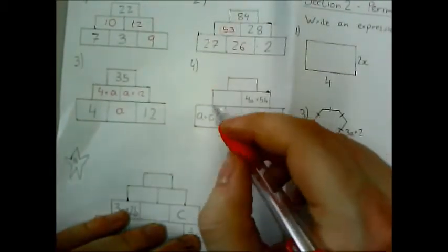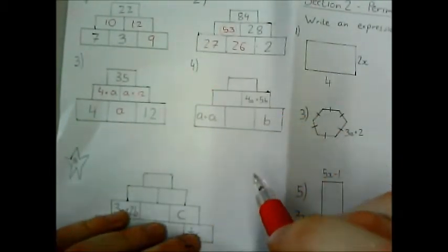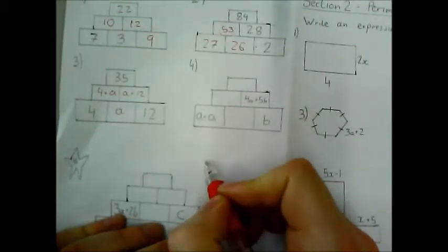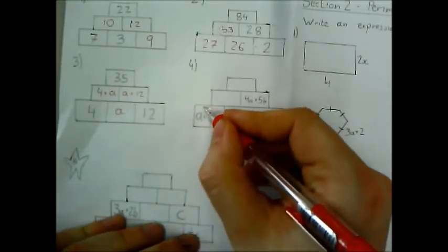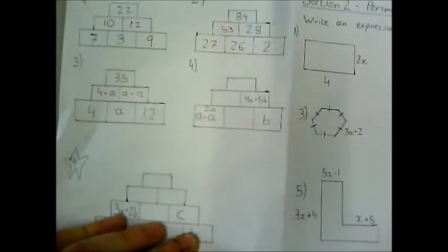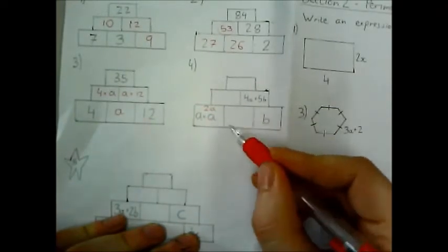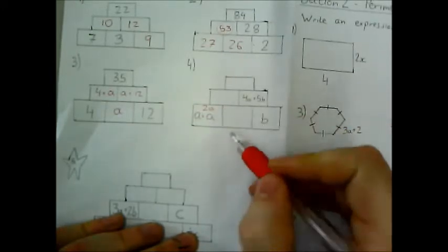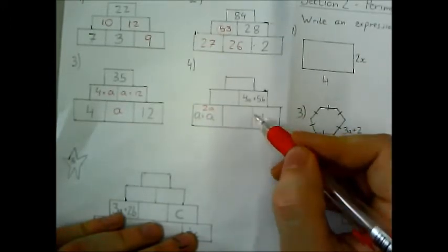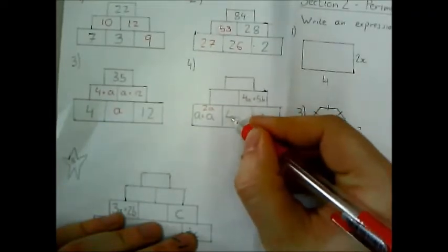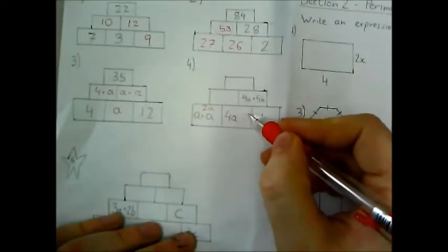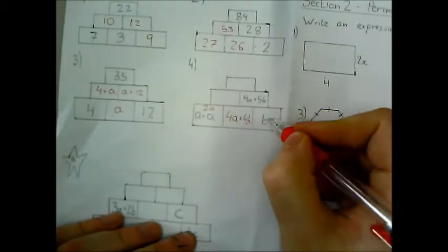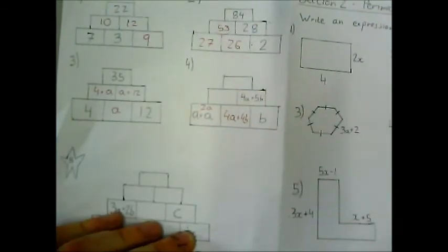OK. And now for question 4. This tests your understanding of collecting like terms. So if you've got a and you add another a, that's the same as having two lots of it. So this is 2a. OK. Now here, this box plus b gives me 4a plus 5b. So clearly, I need to have four a's to combine with this to give me the 4a here. So that's going to be 4a. I need to combine with a b to get 5b. So I need four more b's to get 4b plus b to get 5b.